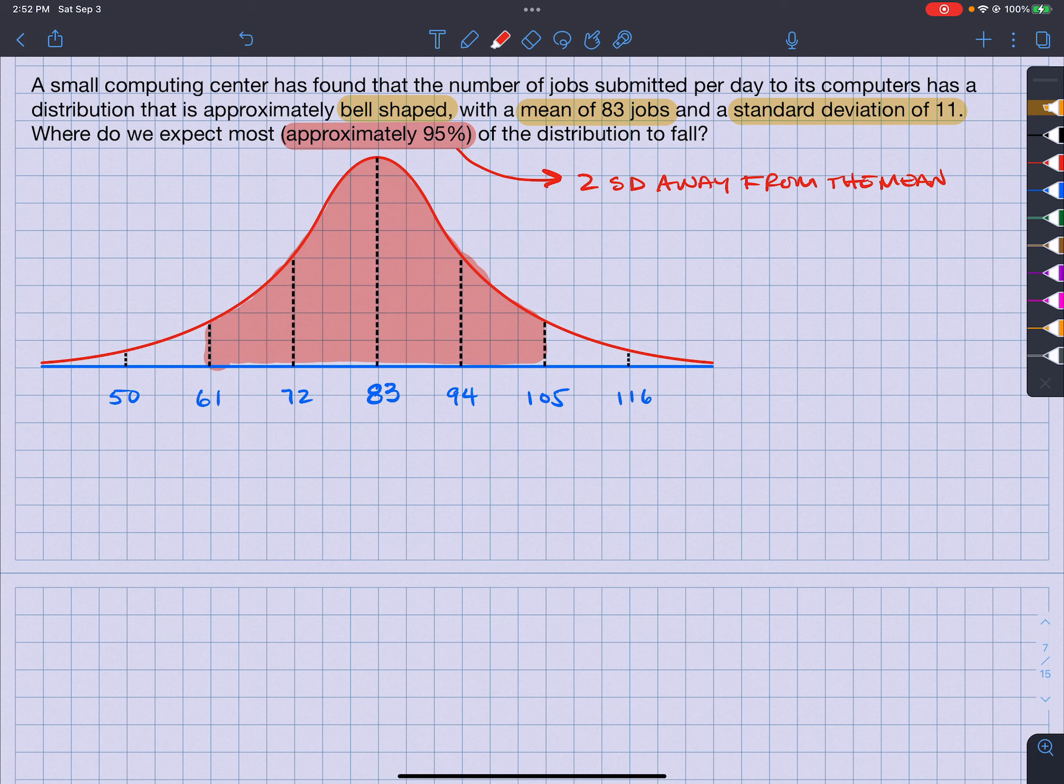So with that being said, where does that put us? That puts us between 61 and 105. So again, it will put us between 61 and 105. And that will cover 95%.